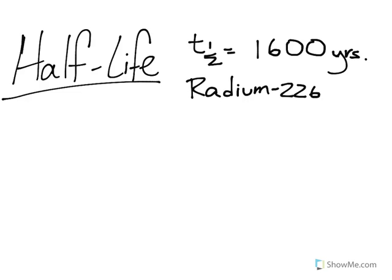Half-life is actually defined as the amount of time it takes for half of a radioactive substance to decay. So that means after a certain amount of that time, only 50% of that radioactive substance remains. We're going to take a look at this example, which is radium-226, and the half-life for that isotope is 1,600 years.